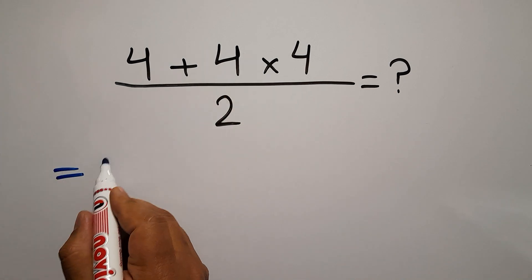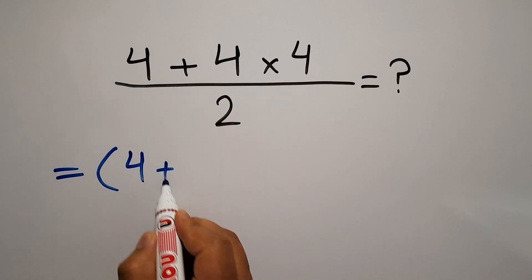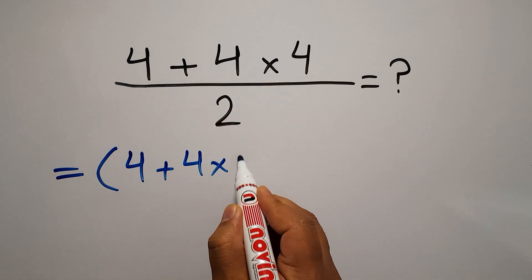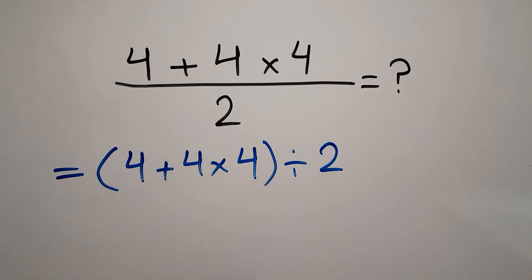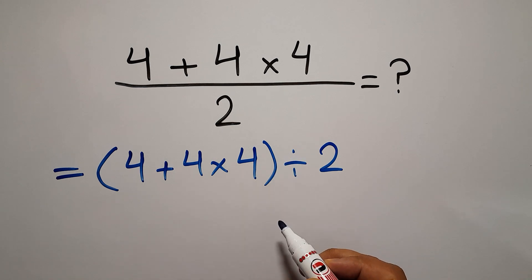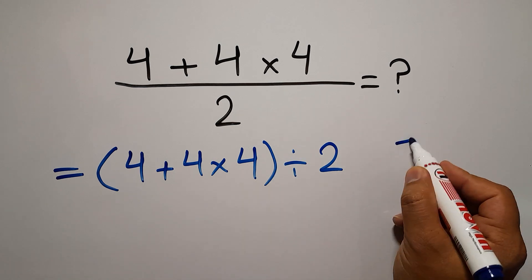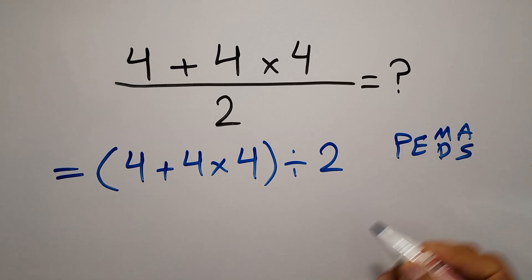The denominator is 2. Now we have this parentheses and this division. According to the order of operations, which is PEMDAS, first we do parentheses, then exponents, then multiplication or division, and finally addition or subtraction.